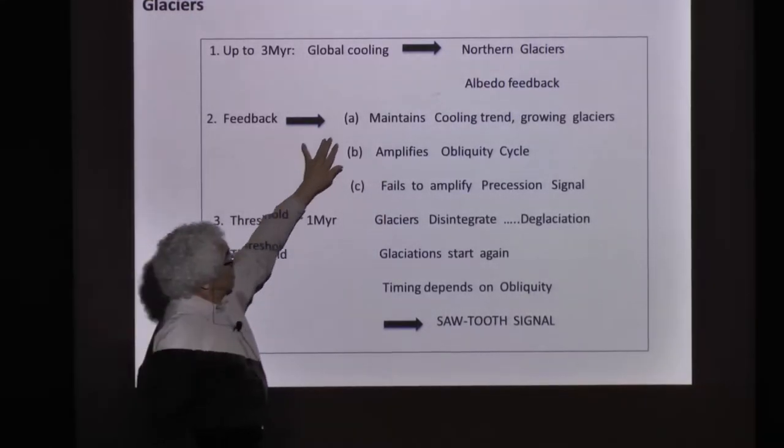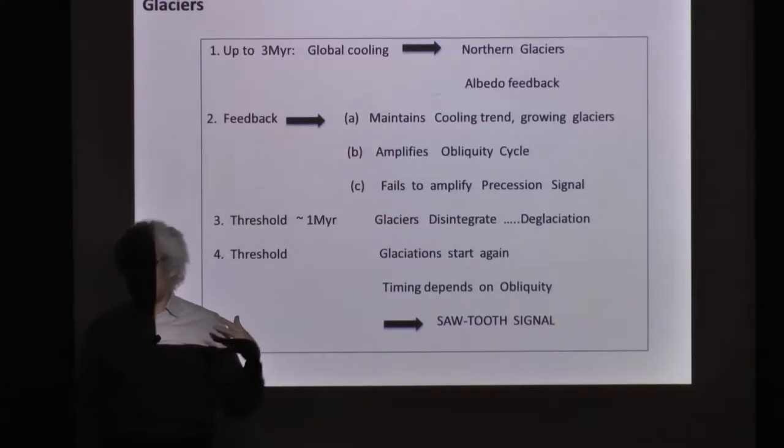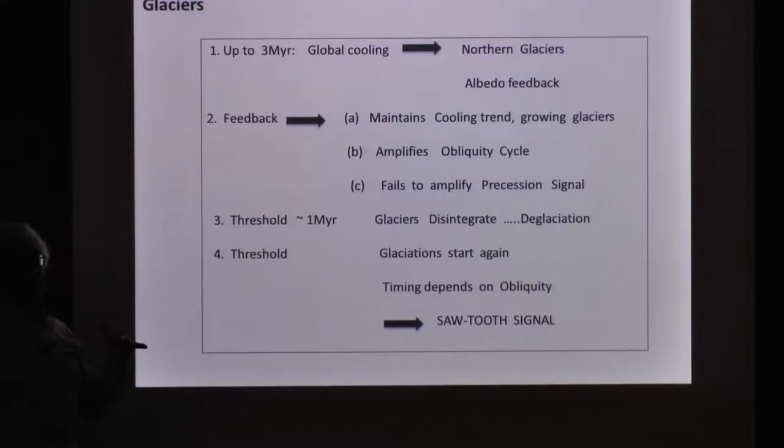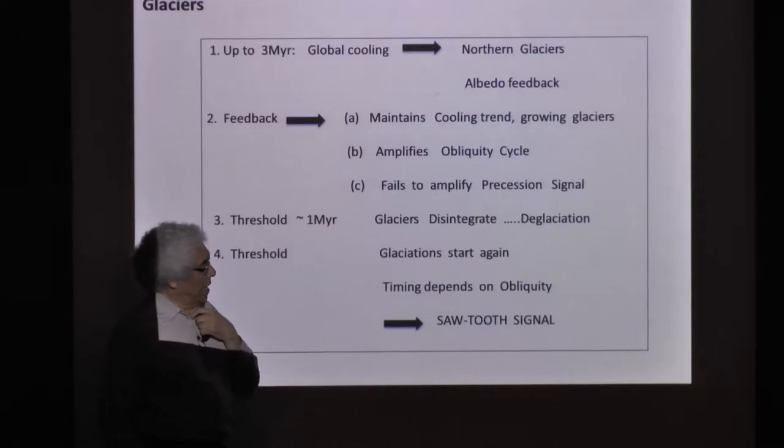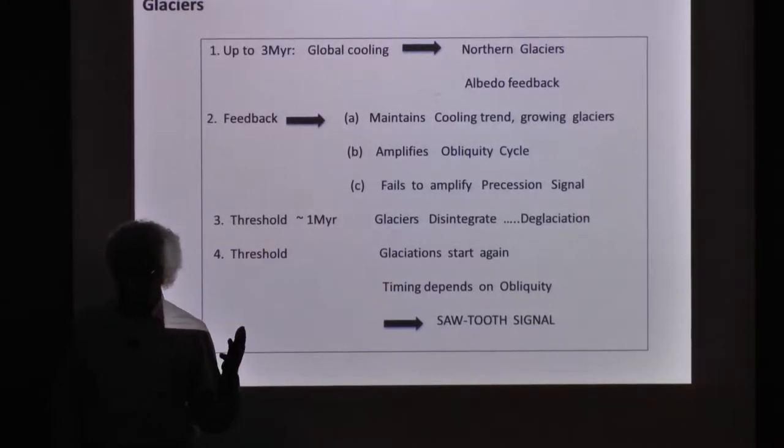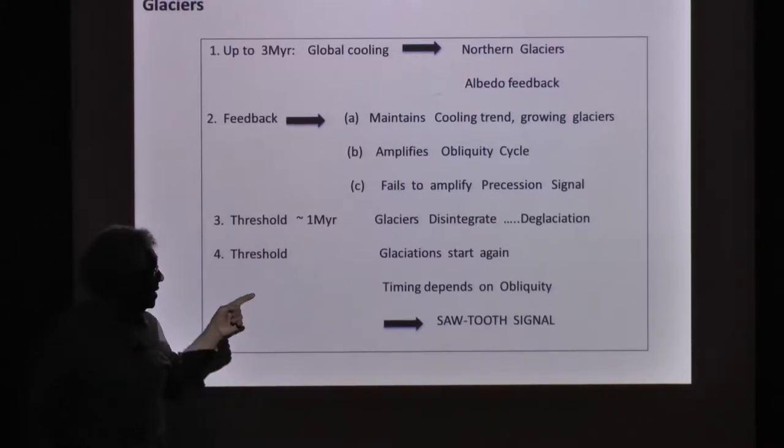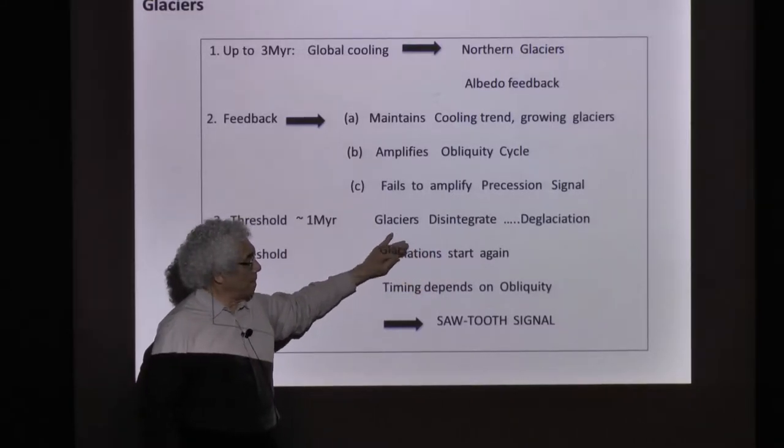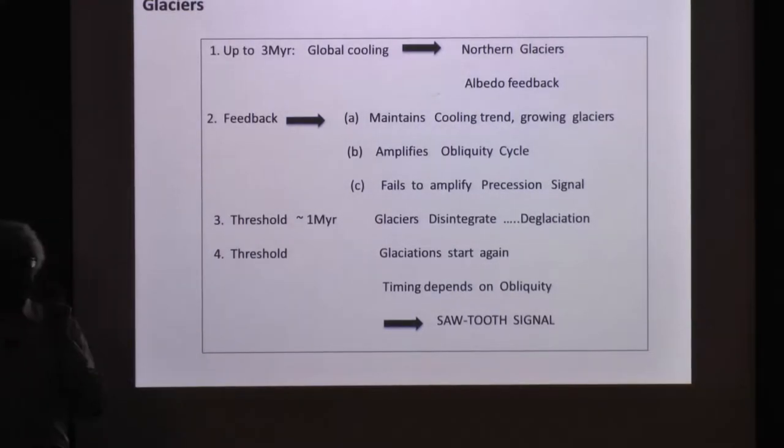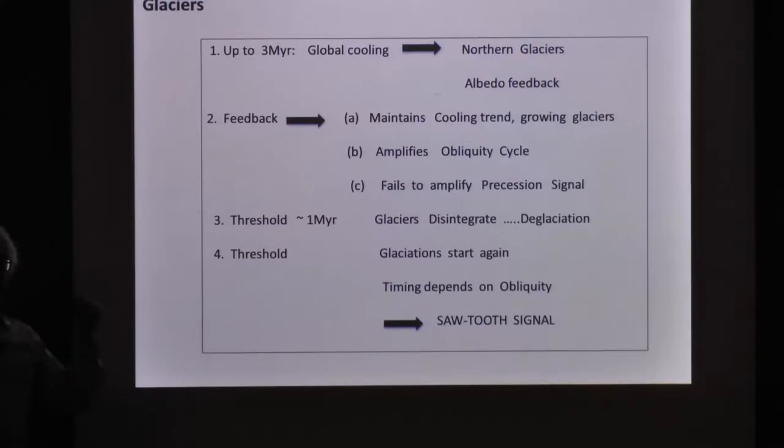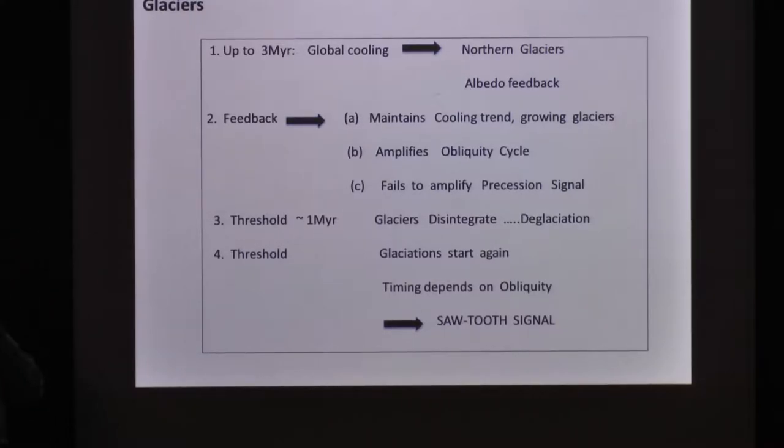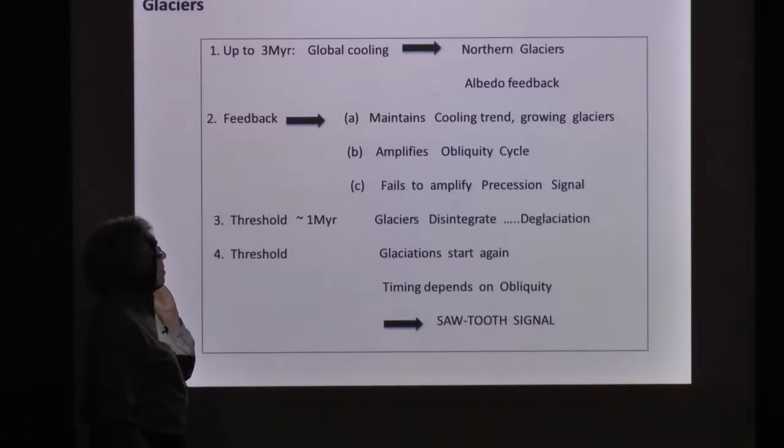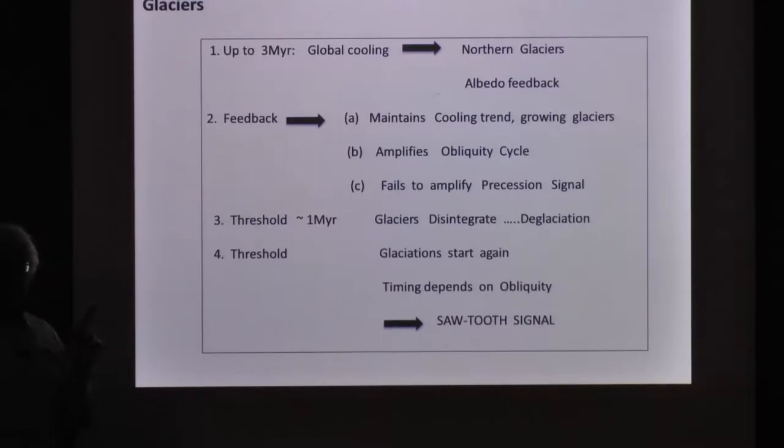At some point, glaciers get very large—they get so large they go unstable. Ice is a good insulator, so geothermal heat from below starts melting the ice and the glacier floats and breaks up. Then it starts over. It could start over because obliquity induces a reduction or increase in sunlight. You can see how obliquity can dictate the timing of this thing. The timing depends—you end up with a sawtooth signal because it takes longer to grow a glacier than it takes to melt it. Lots of work on this—there's an excellent paper by Peter Huybers that summarizes this. You can say we have a good understanding of glaciers.